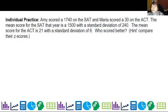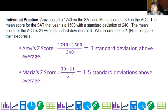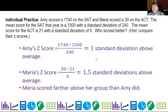Let's look at this example. Amy scored a 1740 on the SAT and Maria scored a 30 on the ACT. The mean SAT score that year is 1500 with a standard deviation of 240. The mean ACT score is 21 with a standard deviation of 6. Who scored better? You can't compare them directly — 1740 on the SAT and 30 on the ACT — because that's like apples and oranges. But we can calculate z-scores for both. Amy: (1740 minus 1500) divided by 240, so she's one standard deviation above average. Maria: (30 minus 21) divided by 6, so she's 1.5 standard deviations above average. Therefore, Maria scored farther above her group than Amy did.